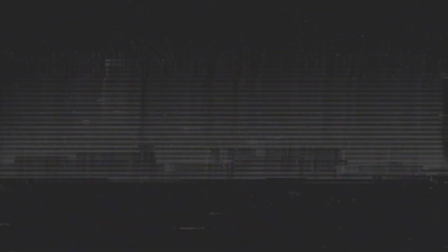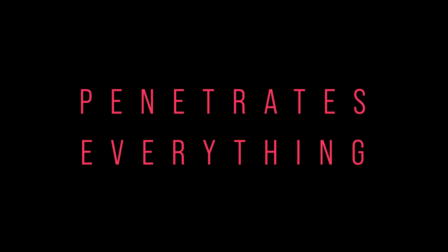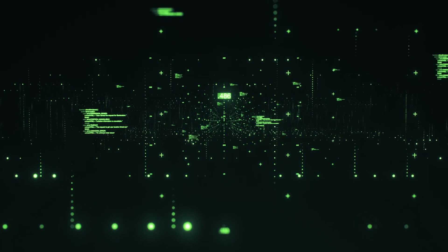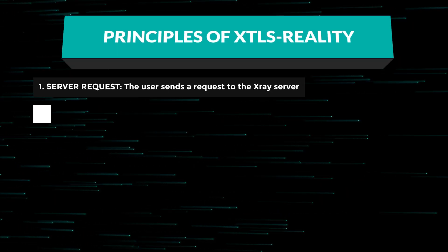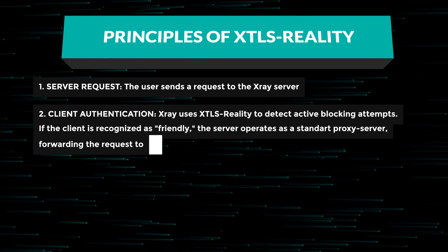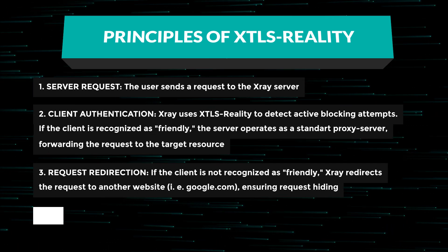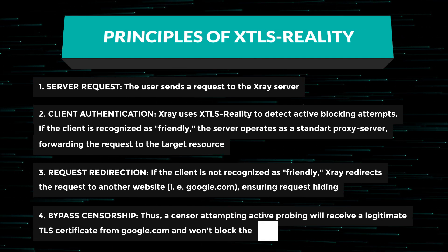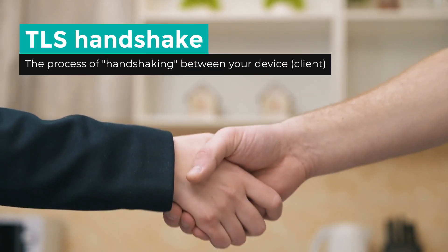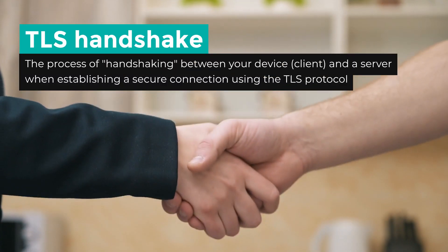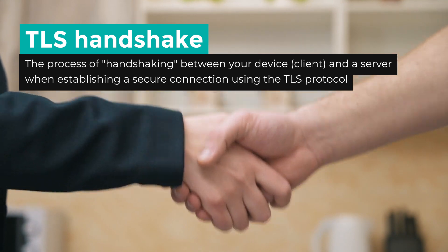X-Ray is a technology designed for bypassing Internet censorship and ensuring anonymity, with the slogan 'Penetrates Everything,' which is not far from the truth. X-Ray functions as a proxy server that redirects and encrypts your Internet traffic through remote servers. XTLS Reality is a new protective technology developed by the creators of X-Ray, designed to bypass active network analysis methods. Unlike previous protocols, XTLS Reality authenticates the client at the TLS handshake stage — the process of handshaking between your device and a server when establishing a secure connection over the Internet.